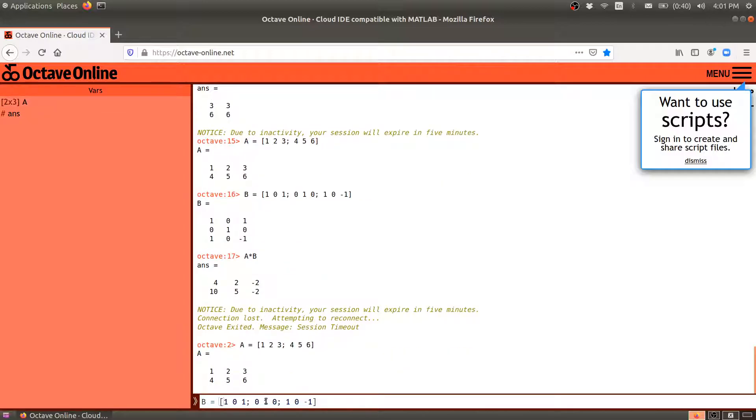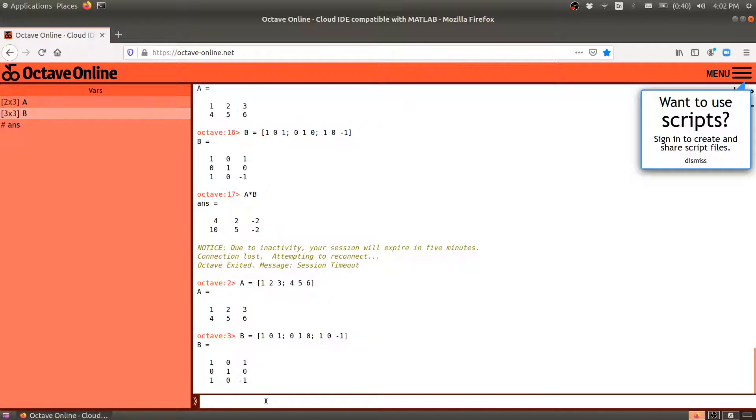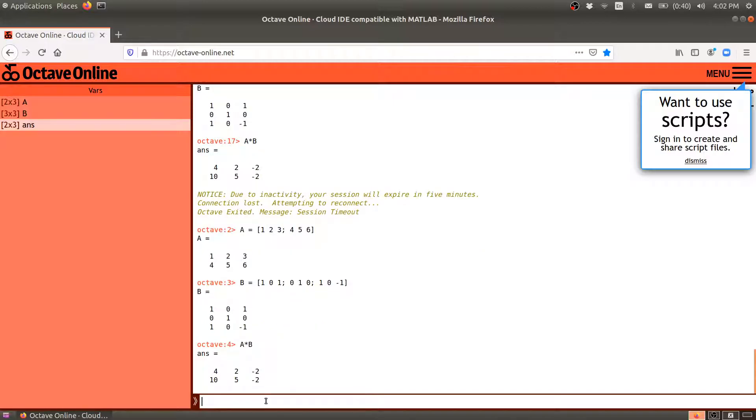Then my matrix B. I've already inputted it before. There we go. There's my matrix B. And I can ask it what is A times B. And I get 4, 2, negative 2, 10, 5, negative 2.